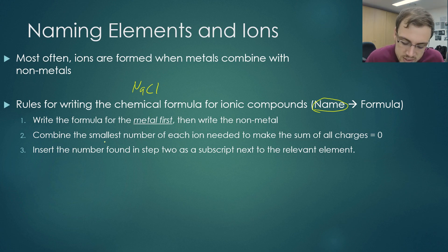Step two here is to combine the smallest number of each ion needed to make the sum of all charges equal zero. This is a very important part and this step here will come up in a number of different modules. Please make sure you're comfortable with it and you're comfortable in being able to determine the charge of a particular atom. When we looked at sodium here, sodium wanted to get rid of its electron. Because of that, the sodium here was plus one because it donated one electron.